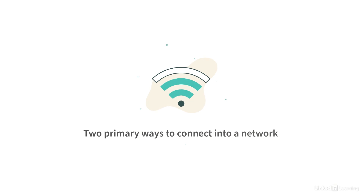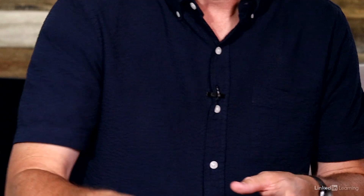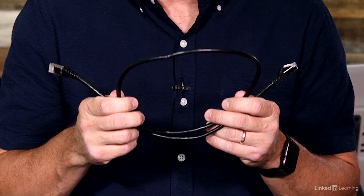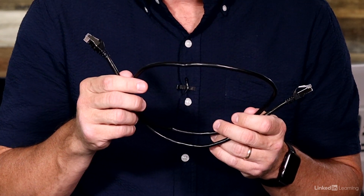A network interconnects devices, but what does that look like? We have two primary ways to connect into a network. First, we have wired connections, and a common example of a wired connection is an ethernet cable, which has an eight conductor connector on each end. This is called an RJ45 connector. You might hear these cables called CAT5 or CAT6 cables. Access to the network might also be over a wireless local area network, or wireless LAN — you might hear that called Wi-Fi for short — and that covers a relatively limited geographical region.